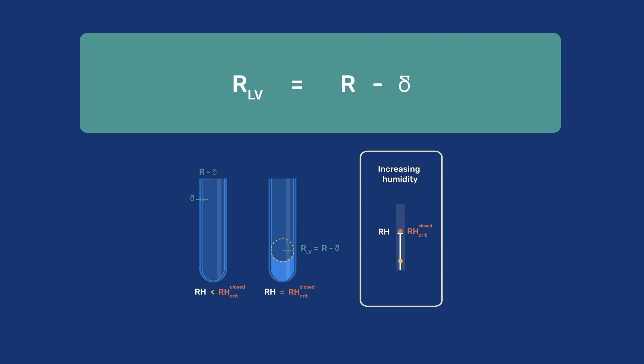The humidity at which capillary condensation begins at the bottom of our tube can therefore be obtained from the expression giving the natural log of RH CRIT closed as minus VL over RT times two gamma LV over R minus delta.